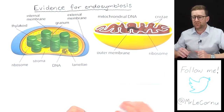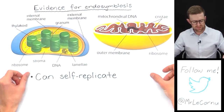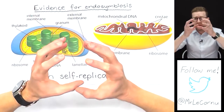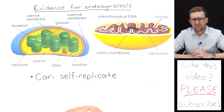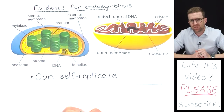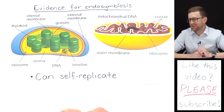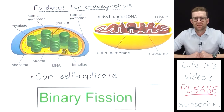The third piece of evidence is that chloroplasts and mitochondria can both self-replicate, and they do so by dividing in a process that looks like cell division. Given that the DNA inside them is circular and not linear, the process by which they divide is actually more similar to binary fission than to the mitotic cell division we see in eukaryotic cells.